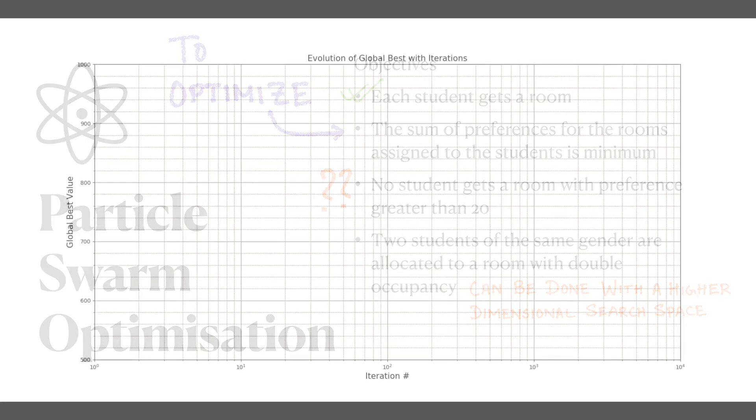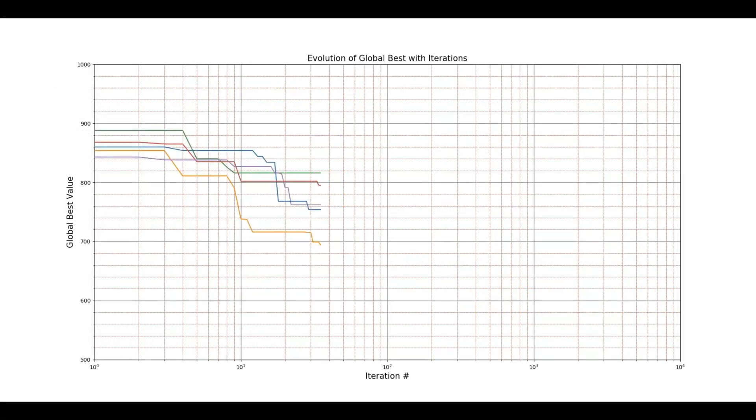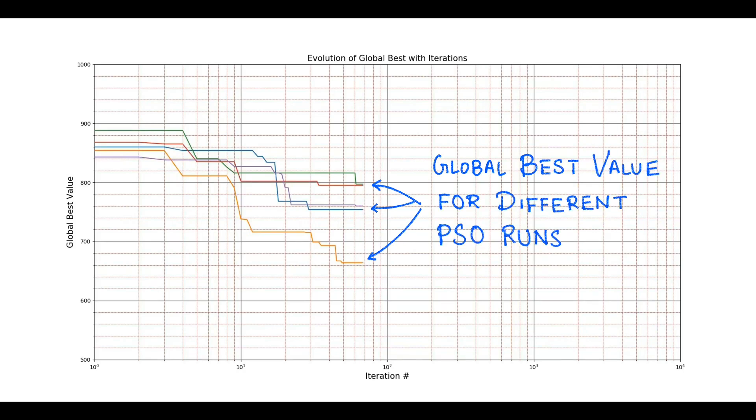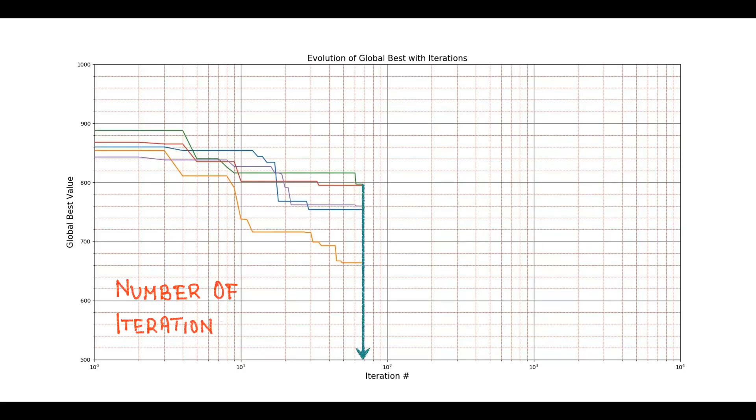Now we start the PSO run. We have parallely started multiple PSO runs. Here you can see the evolving global best values for the different PSO runs. The abscissa value of these points gives the current iteration number.